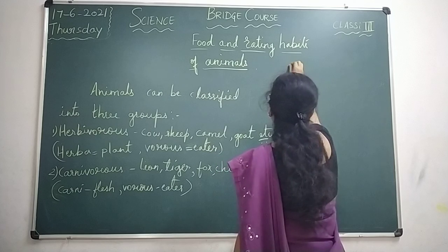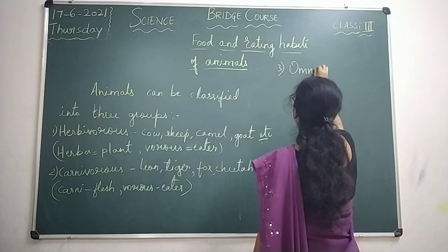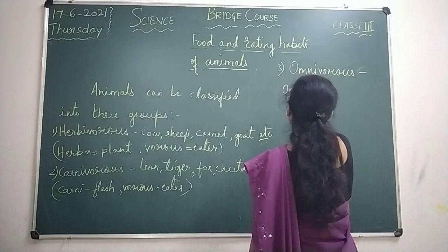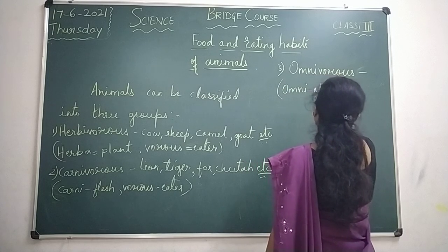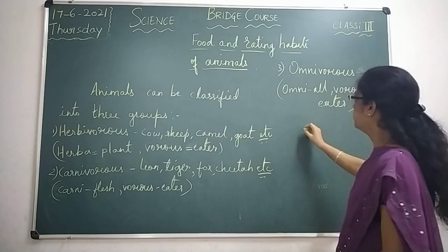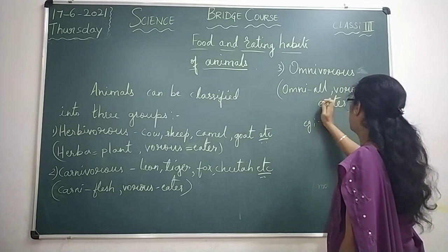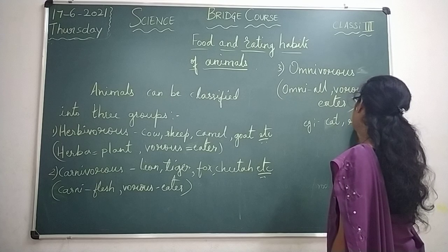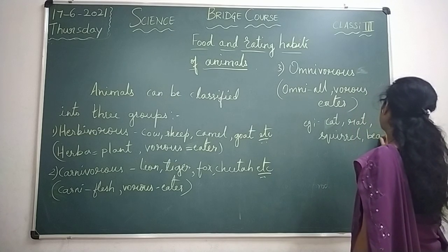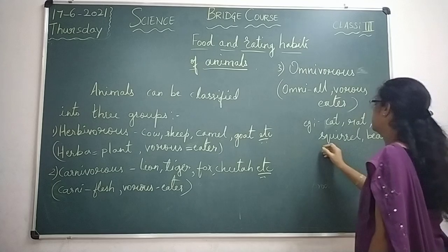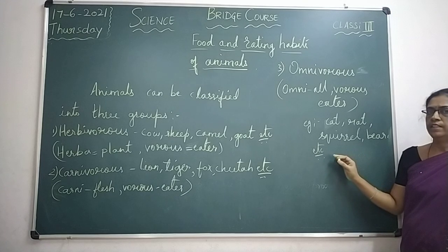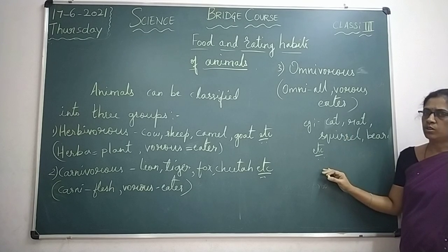And the next one is omnivores. The third group is omnivores. 'Omni' means all, and 'vores' means eater. So omnivores are animals like cat, rat, bear, etc. Omnivores are animals that eat both plants and the flesh of other animals. Animals that eat both plants and flesh of other animals are called omnivores.